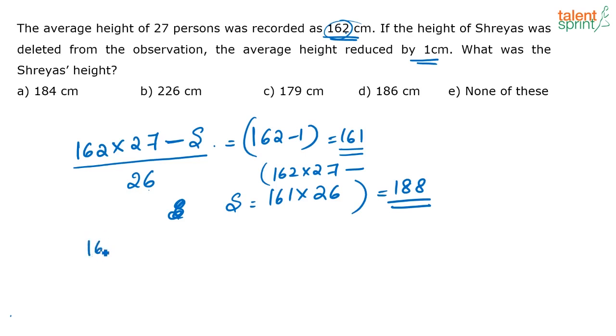What is happening? Earlier, the average was 162 and there were 27 people. That means each person has an average height of 162—Shreya and whoever else is there. Even though that is not their exact height, in general, the average height each person is 162. When Shreya goes, the average height is reducing by 1 for the remaining people.